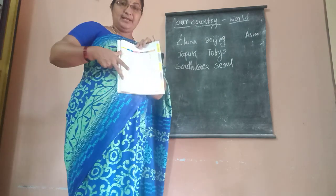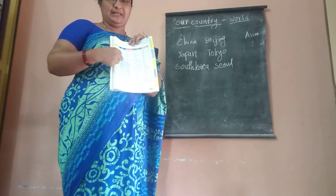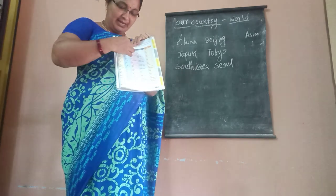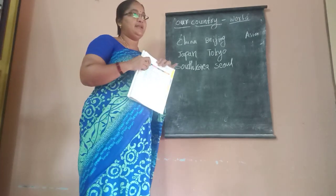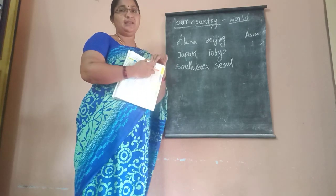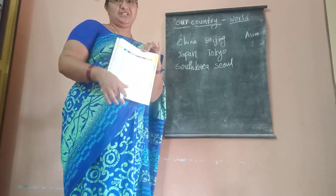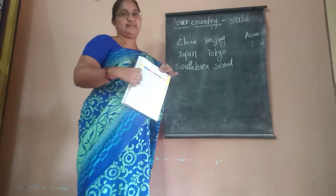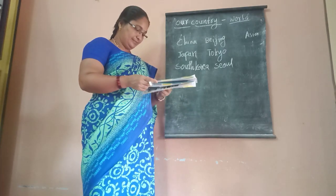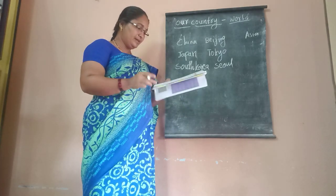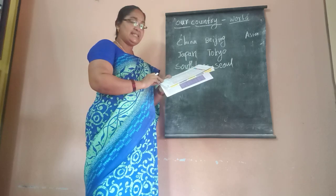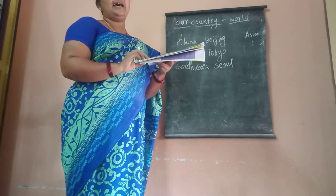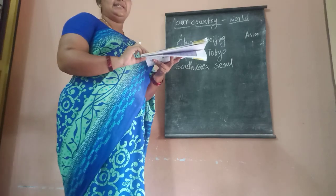Homework is reading the countries and capitals. Read only the countries and capitals. Today you can read the currency and major languages, but today focus on countries and their capitals. In these countries, Russia is the largest country and Vatican is the smallest country in the world.